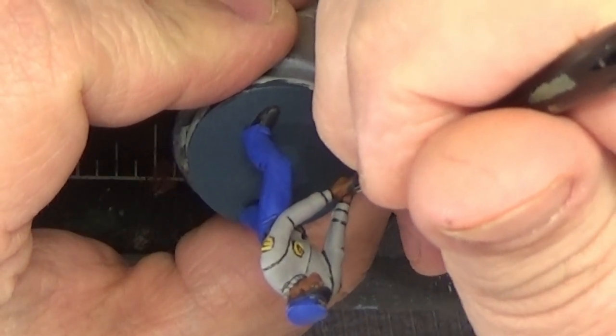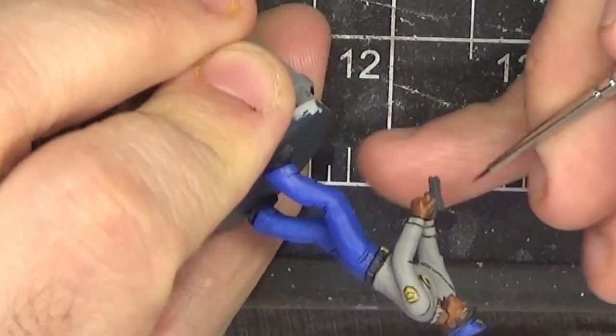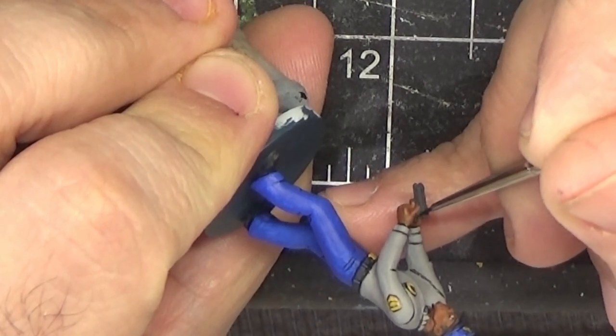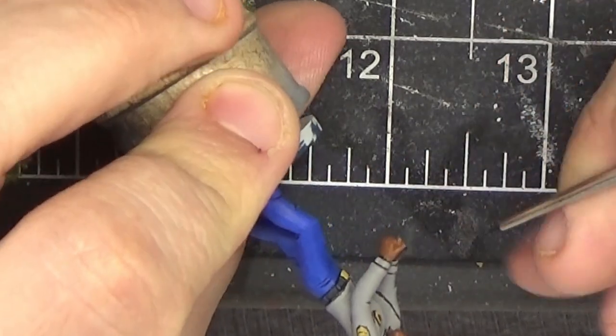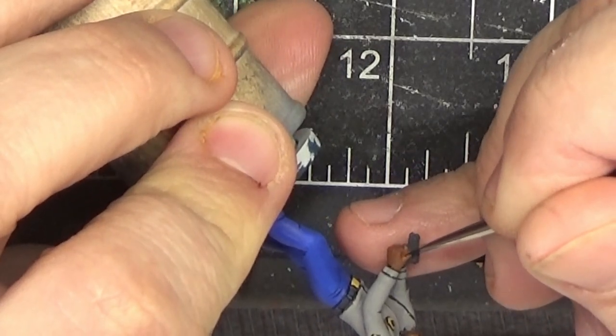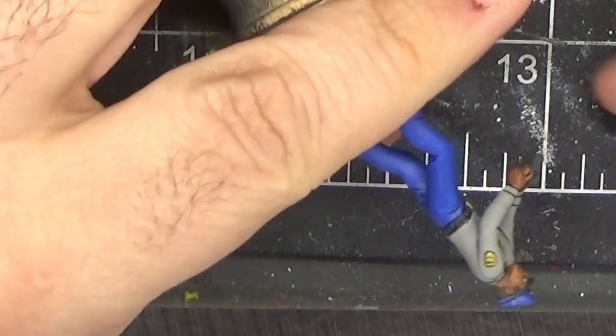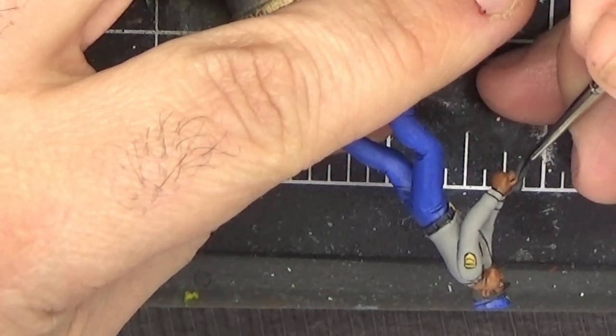Now moving down to the hands, I'm dark lining between the hands, between all the fingers, and along the separation between the fingers and the gun. There's also some texture on the gun that I'm picking out here.